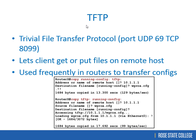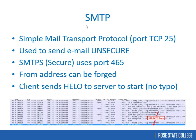SMTP — Simple Mail Transport Protocol — uses port 25 and is normally used to send email. It's unsecured by default, meaning email is transmitted in clear text. Most people don't have SSL encryption turned on for their email. There is SMTPS for secure email, which uses port 465. Most of you probably use Gmail, which handles encryption anyway.